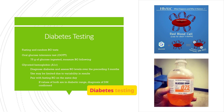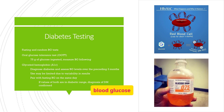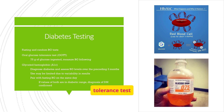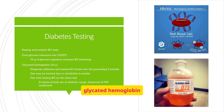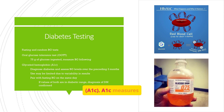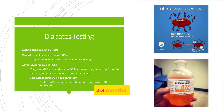Diabetes testing includes fasting and random blood glucose tests, the oral glucose tolerance test (OGTT), and glycated hemoglobin, A1c. A1c measures average blood glucose levels over the past 2–3 months.